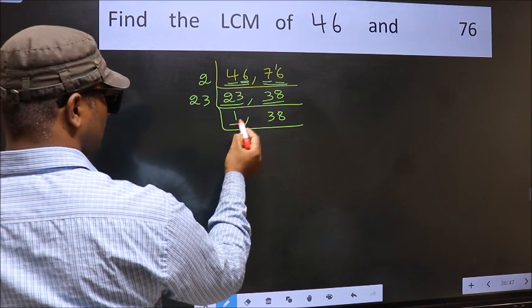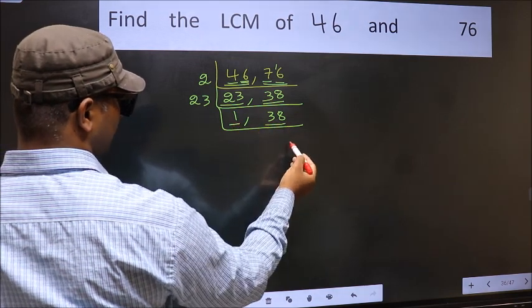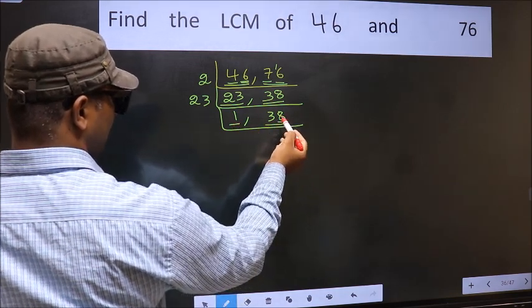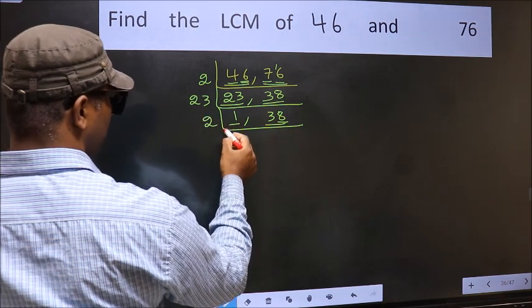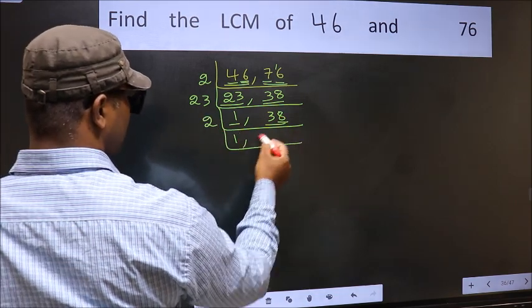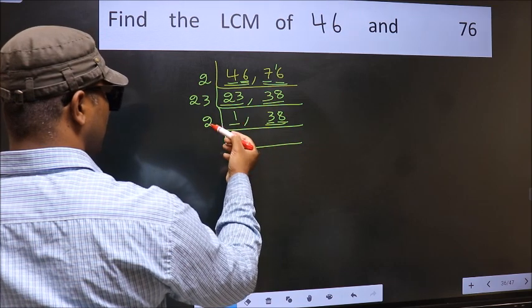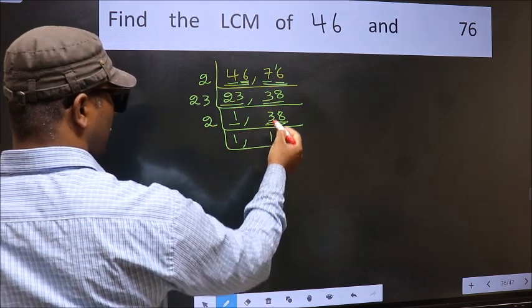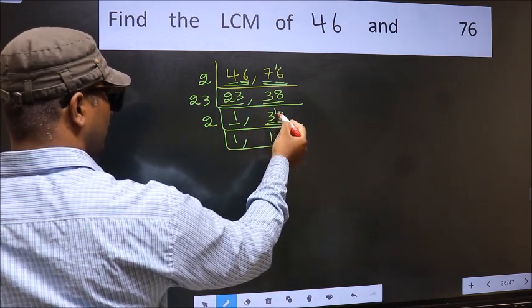We got 1 here. So focus on the other number 38. Last digit 8, even. So take 2. First number 3. A number close to 3 in 2 table is 2 times 1 is 2. 3 minus 2, 1, 1 carried forward 18.